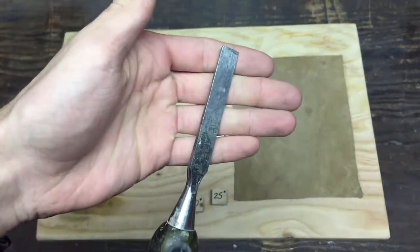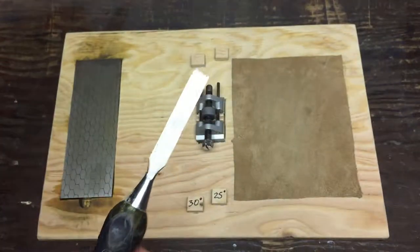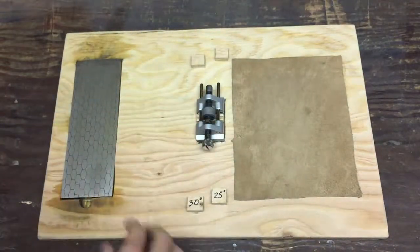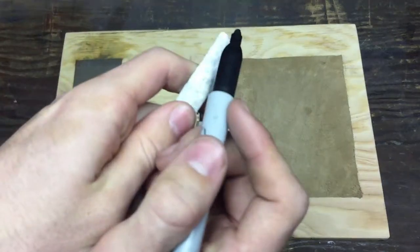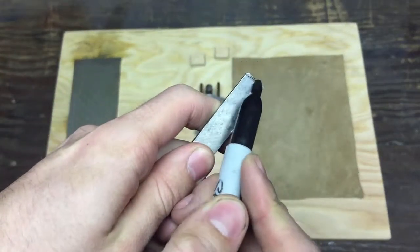So the first step will be flattening the back. And for that, I'm just going to use a simple trick that's using sharpie on the tip. So when the sharpie is gone, you know that the tip is flat.